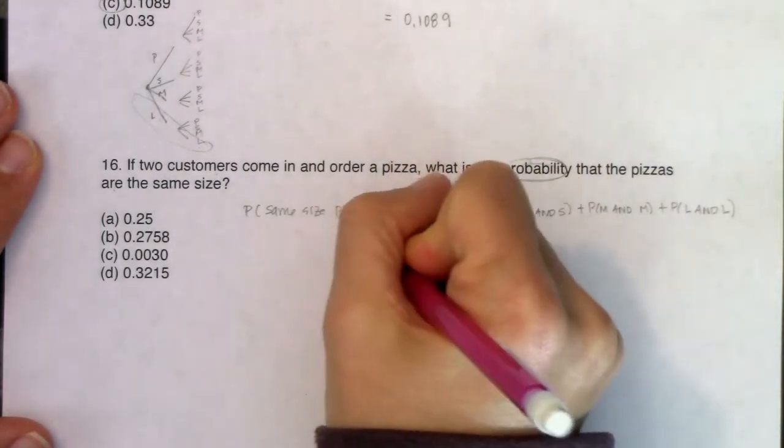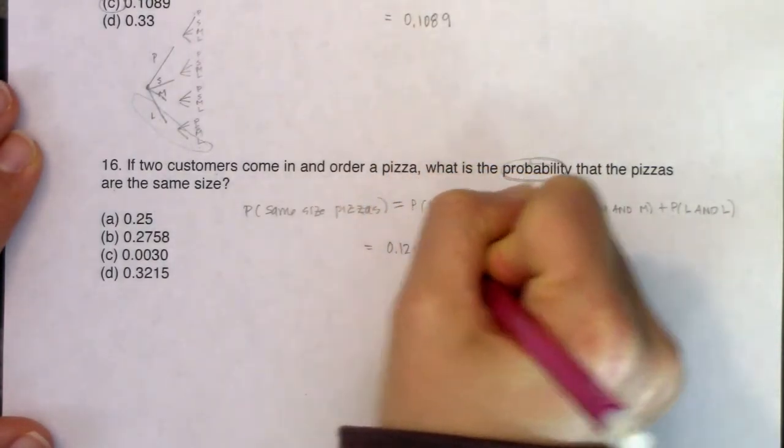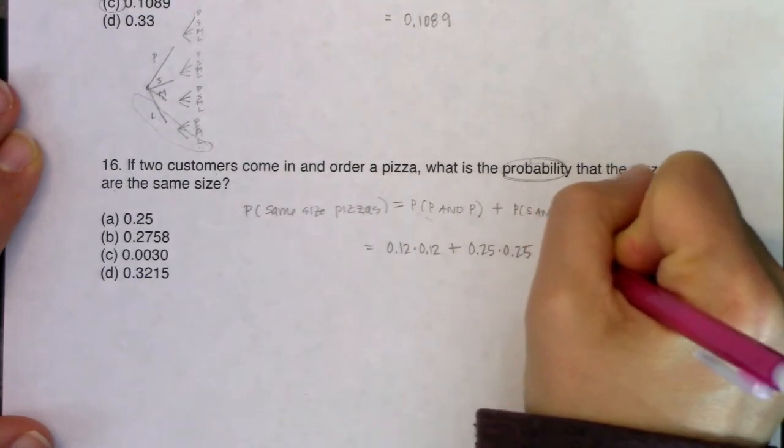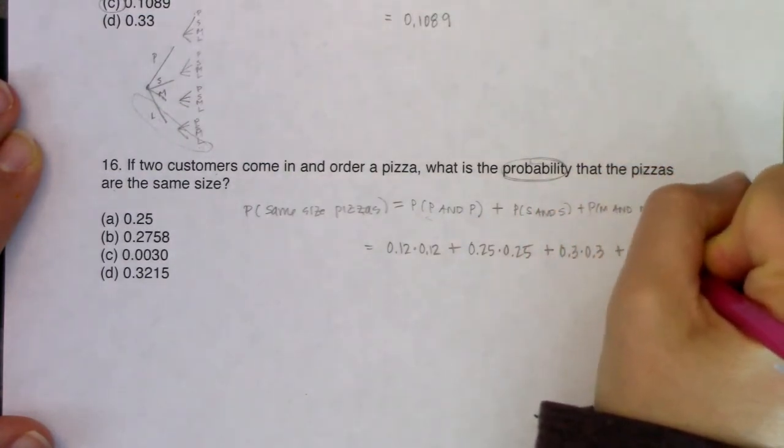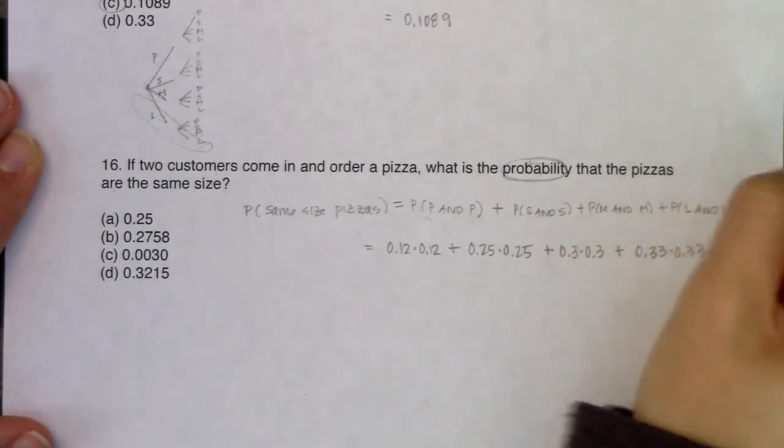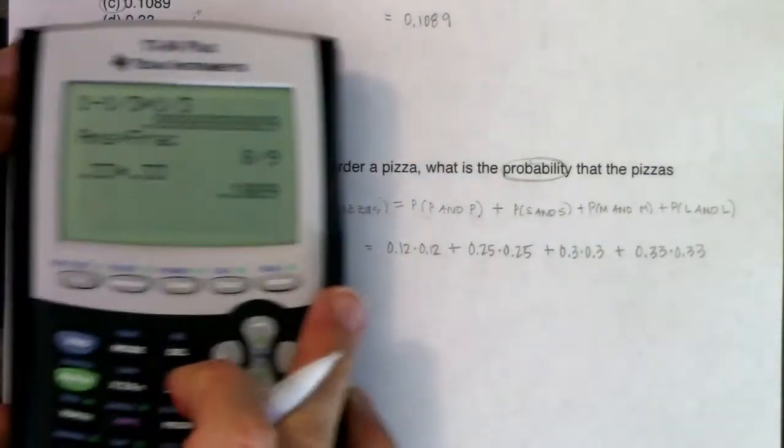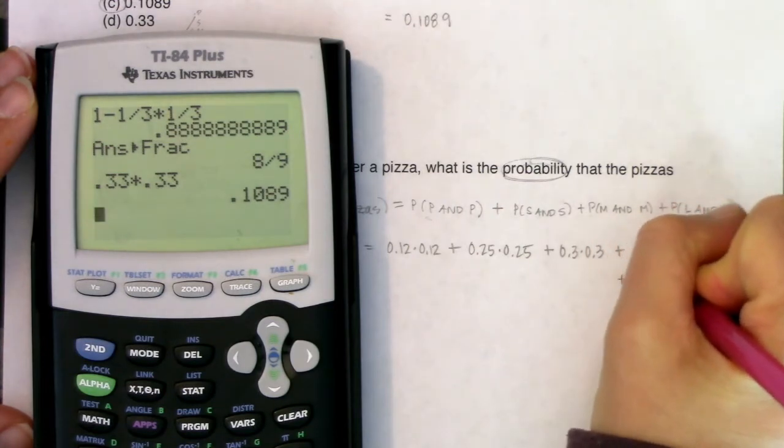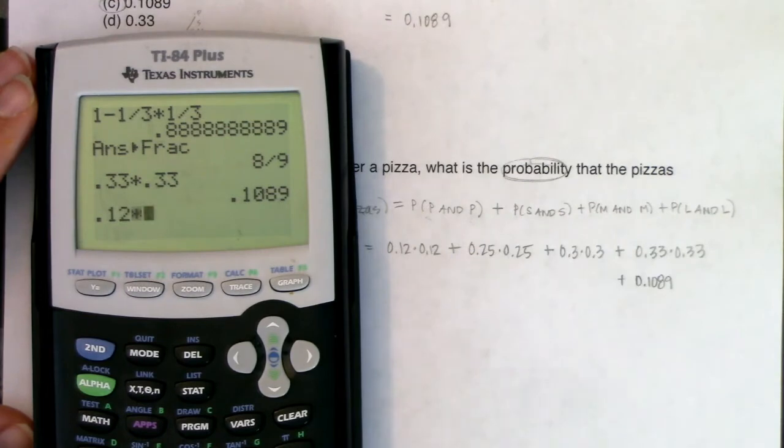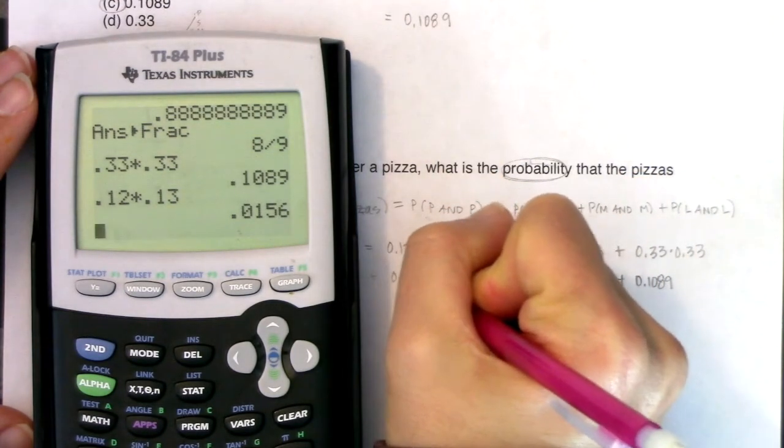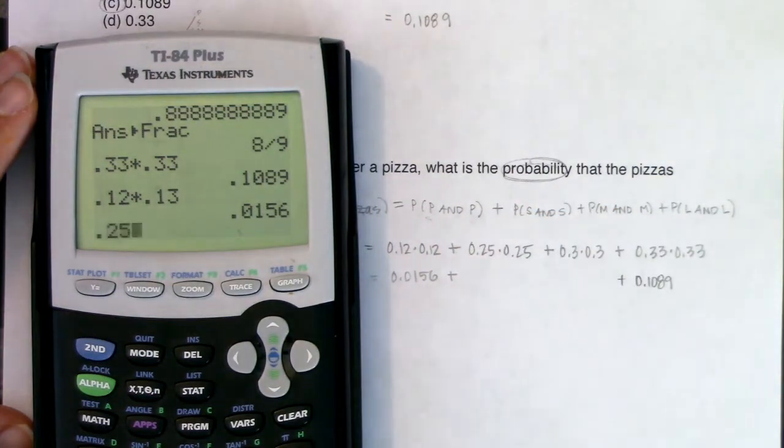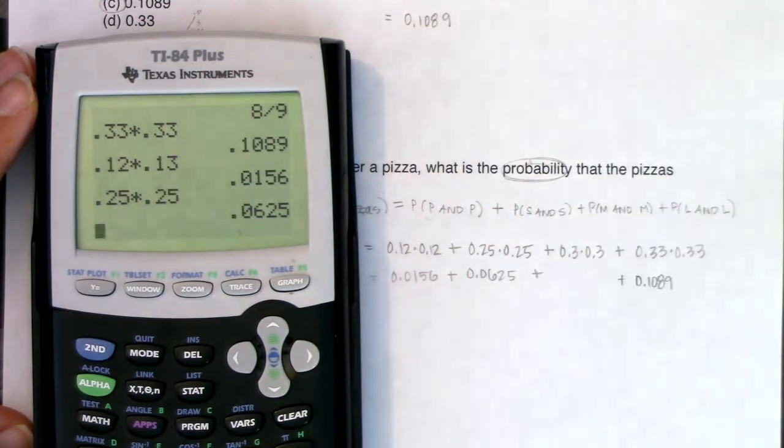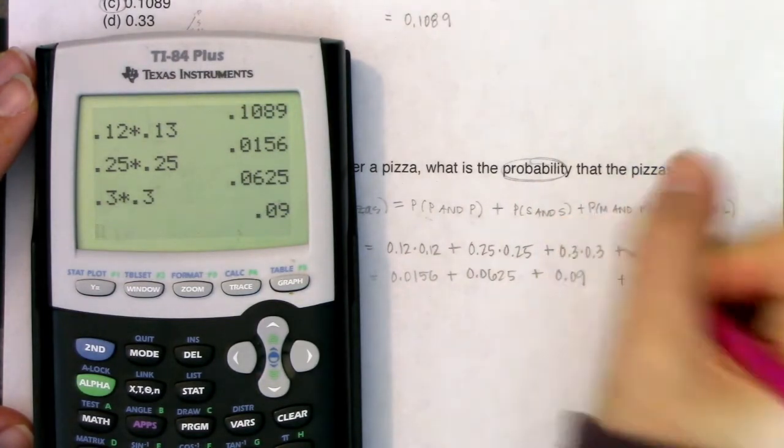We've got 0.12 times 0.12, the small folks at 0.25 times 0.25, the medium folks 0.3 times 0.3, and the large folks 0.33 times 0.33. So PEMDAS—I'm going to do the products first, multiply along those branches, and then I will add the disjoint branches. This was already 0.1089, I don't want to recalculate it. So we've got 0.0156, 0.0625, and then 0.3 times 0.3 should be about 0.09.